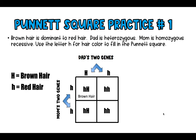Look at the second square and tell me: is the phenotype brown hair or red hair? If you guessed red hair, you're correct. The only way we can have red hair — that recessive trait — is if both sets of instructions are for red hair, both recessive and lowercase. We see that in the third square too, and then the fourth square has brown hair again because of that dominant trait.